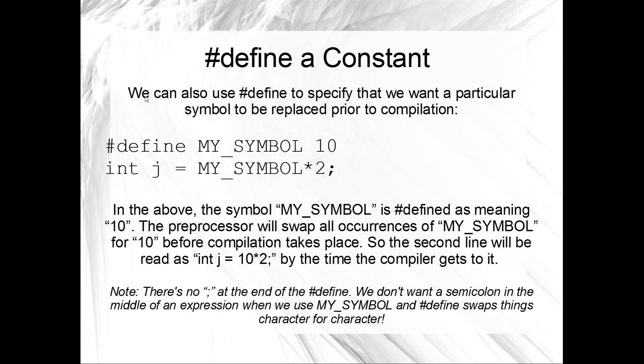Okay, so before we get onto macros, we should have a look at about the simplest use of define and other than, of course, the guards that we spoke about before, the simplest use of define would be to define a constant. You can do it something like this. Define or pound define my symbol. That's the symbol name just there. And then whatever constant you want. So 10. And then later on, we could say something like int j equals my symbol times 2. And by the time the C++ compiler gets this line of code, the preprocessor will already have swapped my symbol for 10. So all the compiler will see is int j equals 10 times 2, you'll see.